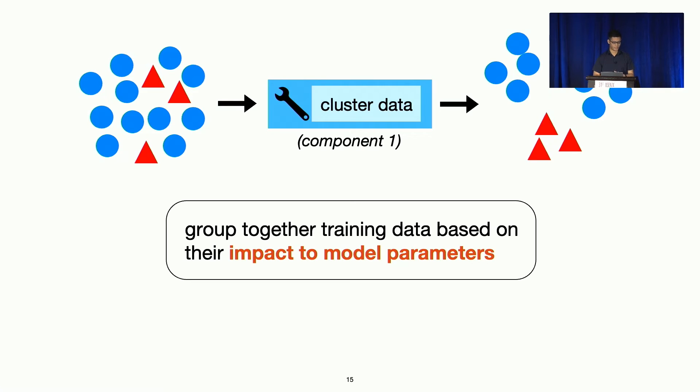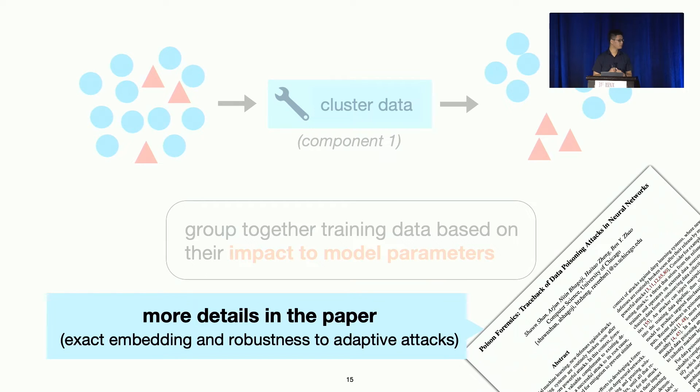And for this work, we do this by using, for each training data point, by using its impact on the model parameter during the training process as the embedding. For poison and benign, they have very different objectives during the training process. So they oftentimes have very different embedding space so we can group them into separate groups.